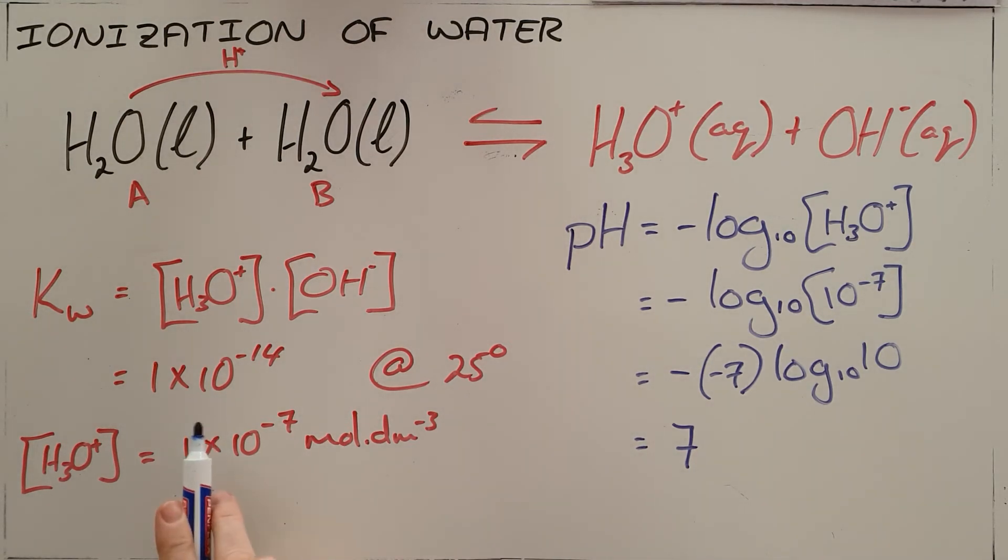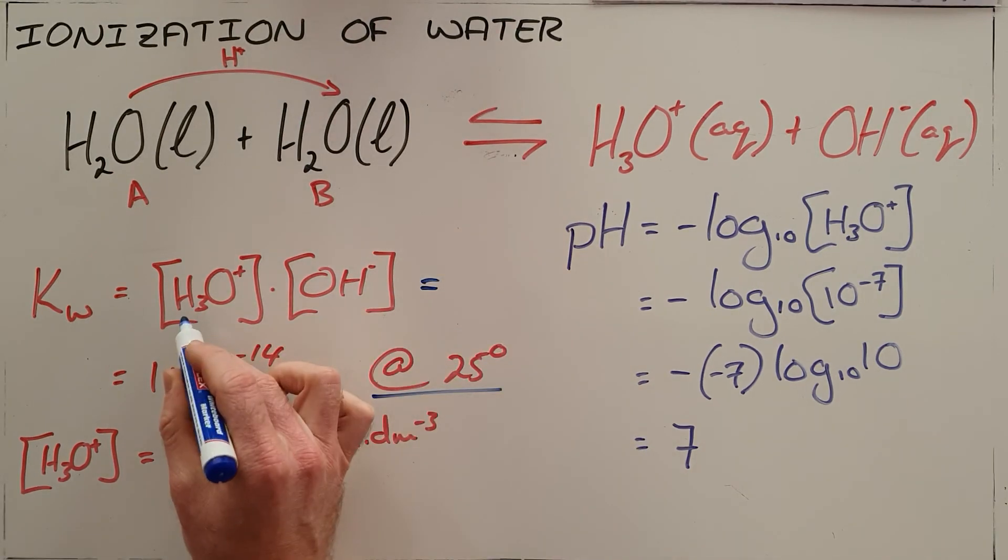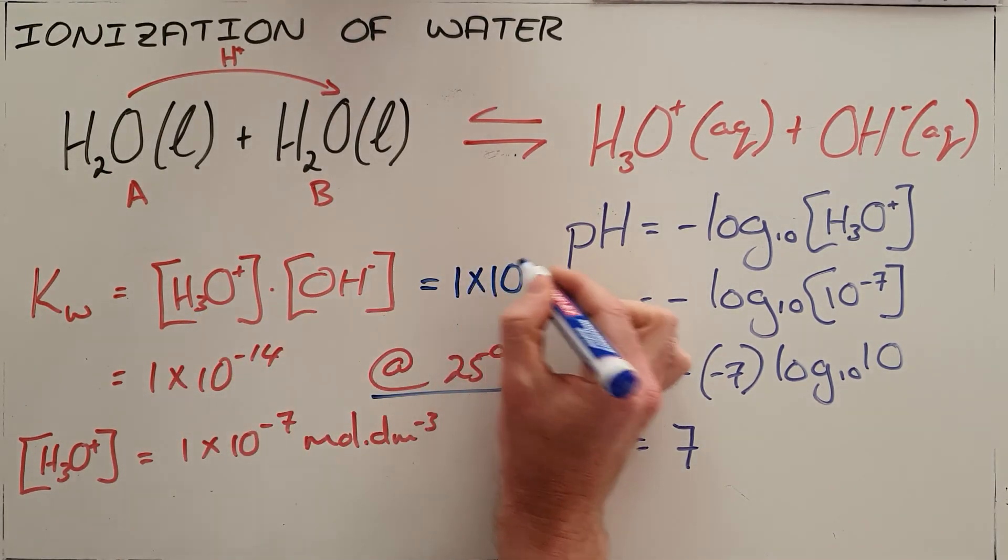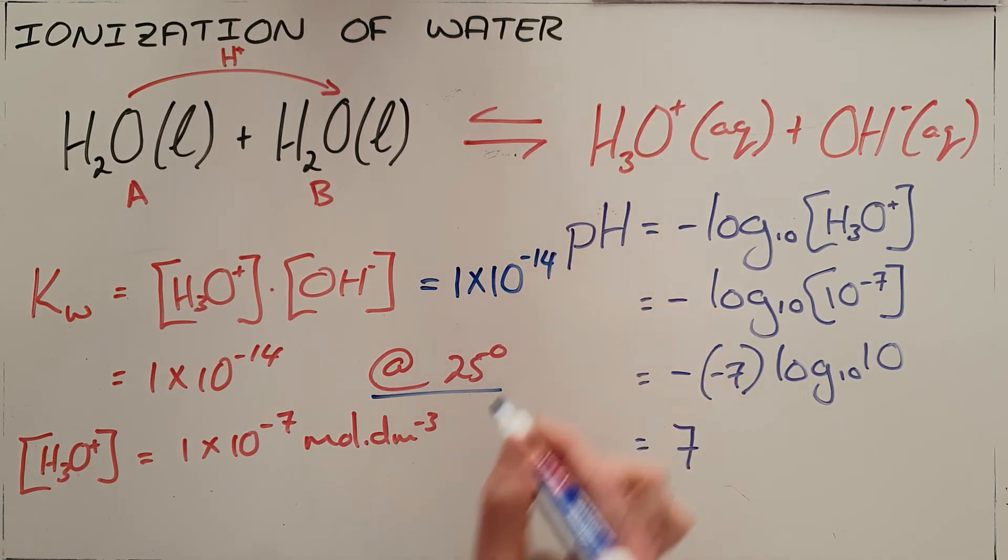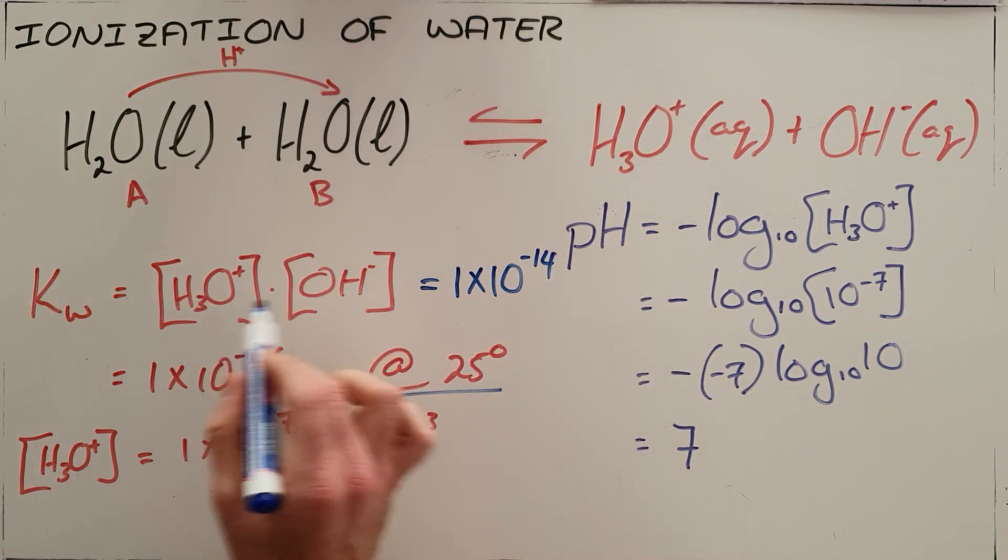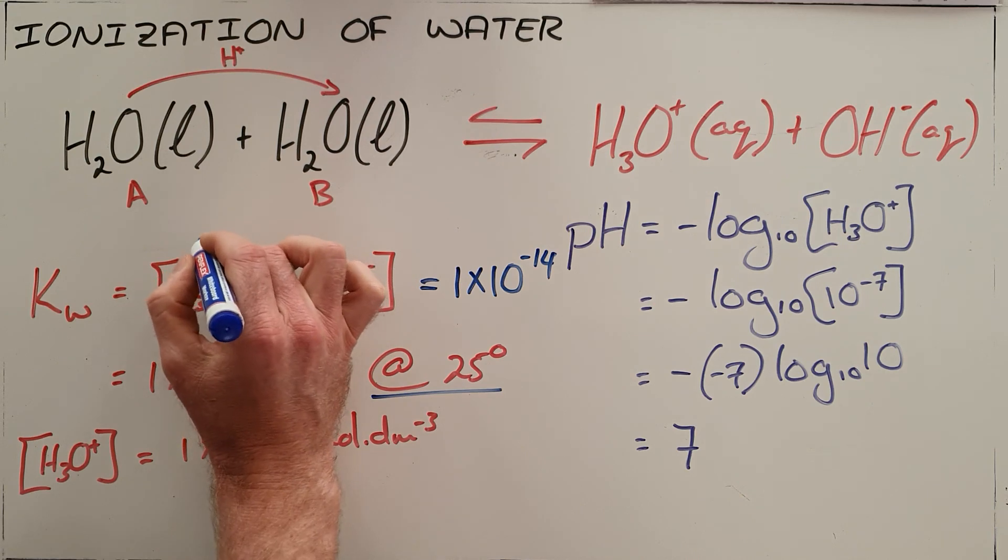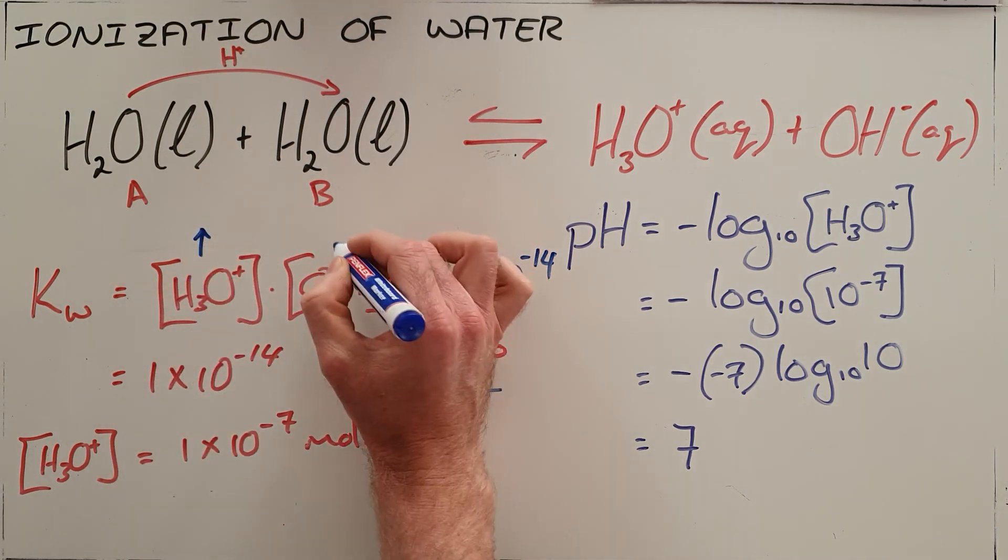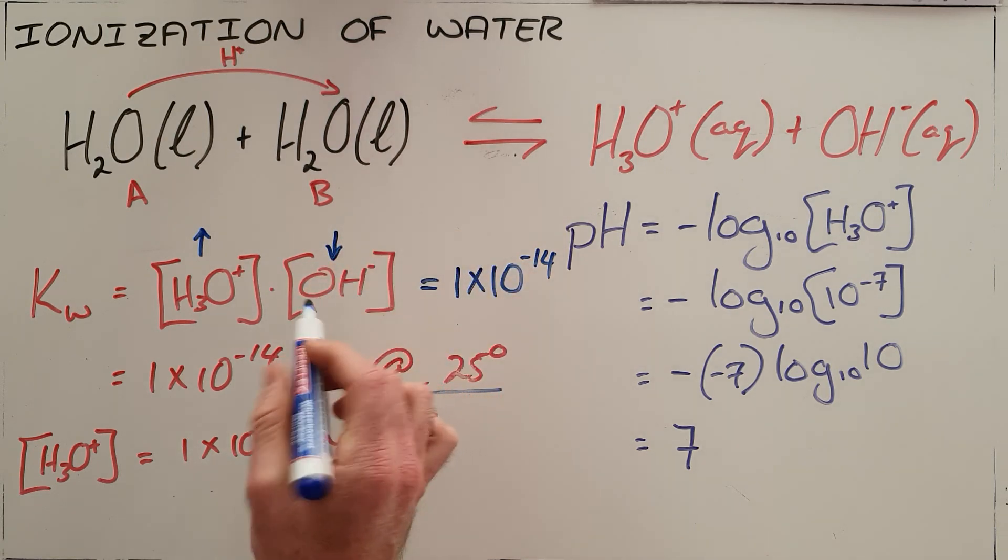Since this equilibrium constant is a constant at a specific temperature, we use this as an identity known as the ionic product of water. Because the concentration of hydronium multiplied by the concentration of hydroxide equals 1 times 10 to the minus 14, we have an inverse proportion, which allows us to determine that when the hydronium concentration increases, the hydroxide concentration will decrease, and vice versa.